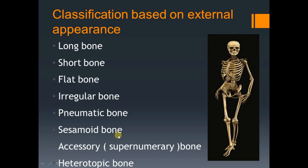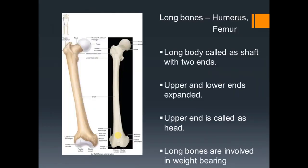Long bones are mainly present in the limbs. A classical example of a long bone is the femur, which is the thigh bone or longest bone in our body. Then we have the humerus — the equivalent bone in the arm — and radius, ulna, fibula, and tibia. These are all long bones.